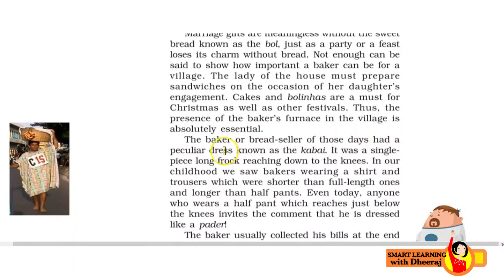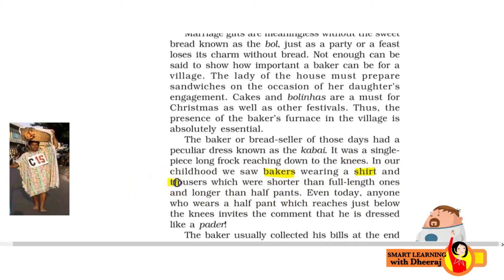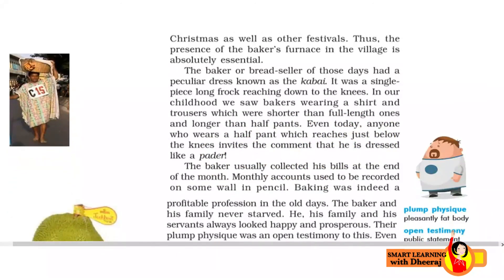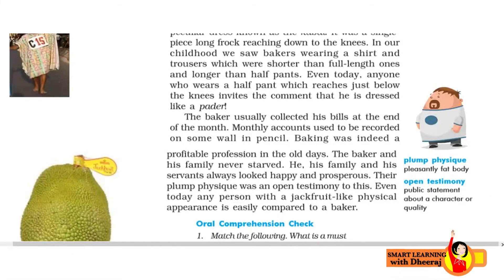The baker or bread seller of those days had a peculiar dress known as 'kabai.' Ab us samayi mein jo baker hote the, unki ek bahut hi alag tariqi ki dress hoti thi — yahan is photo mein dikhaayi hai — ek single frock style ki dress hoti hai, bahut zyada loose hoti, aur knee tak hoti thi. It was a single piece long frock reaching down to the knees. In our childhood, we saw bakers wearing a shirt and trousers which were shorter than full length but longer than half pants — knees se neeche tak hoti thi, aur ankles se oopar tak. Even today, anyone who wears a half pant which reaches just below the knees invites the comment that he is dressed like a padder.